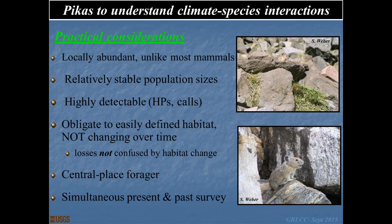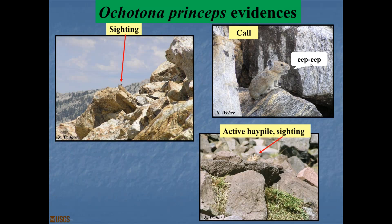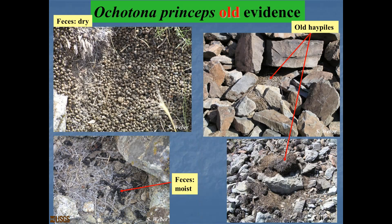The pieces of evidence we use to tell us where pikas currently are: if we hear them, we know they're there; if we see them, we know they're there. They also have massive hay piles they create to be active during the winter and that they defend. We also know two types of evidence that tell us pikas used to be in an area: old fecal pellets — like all good lagomorphs, they re-ingest those to increase extraction of nutrients and water — and old hay piles where they used to have their centers of activity.